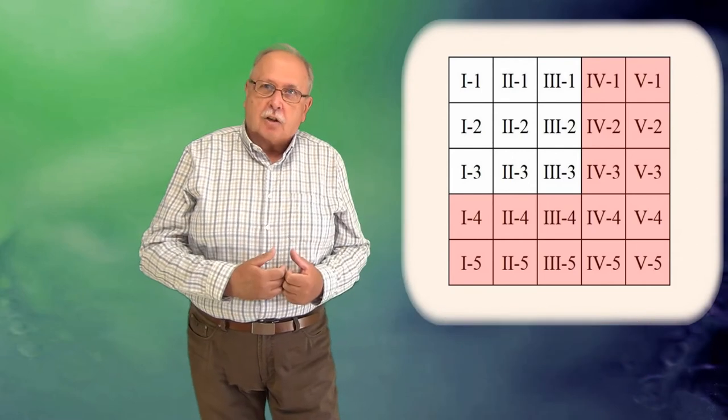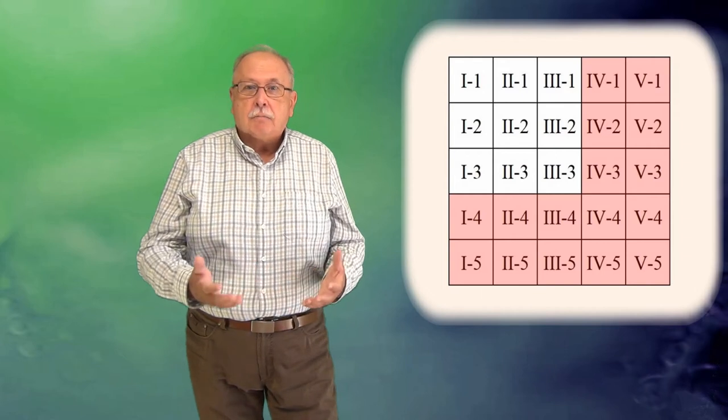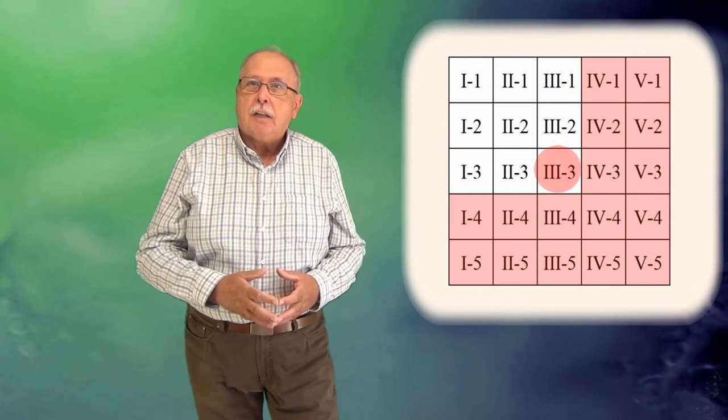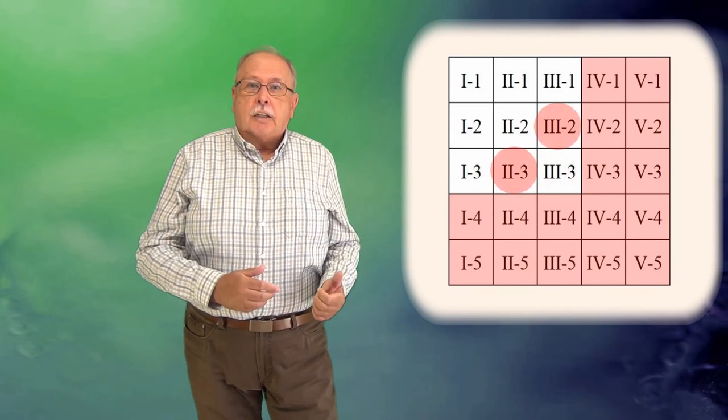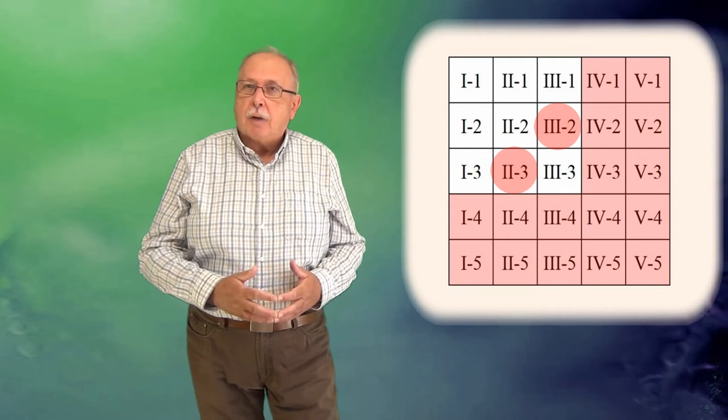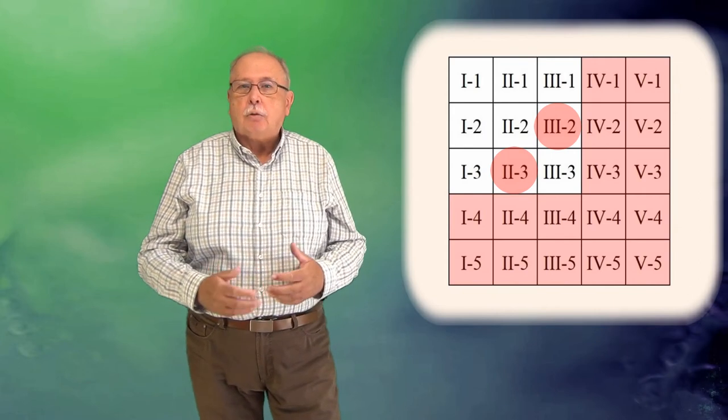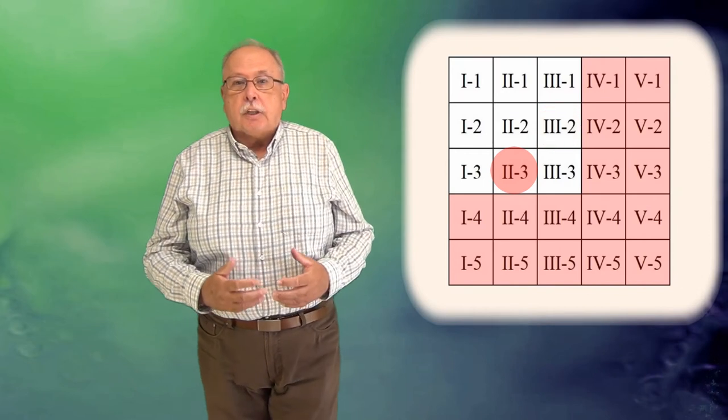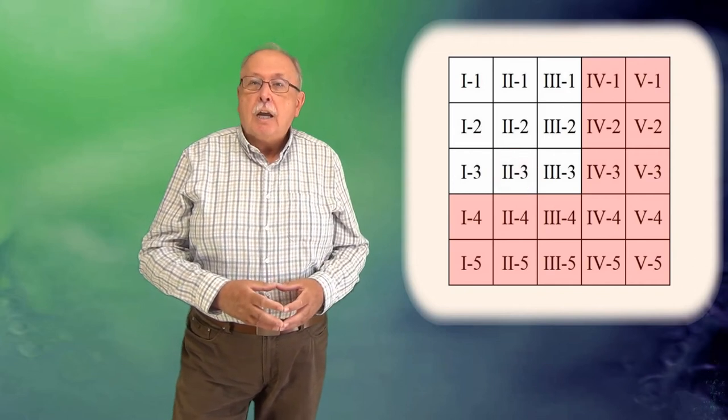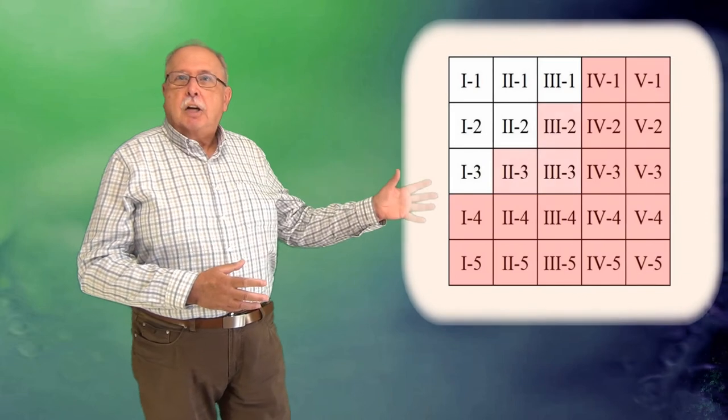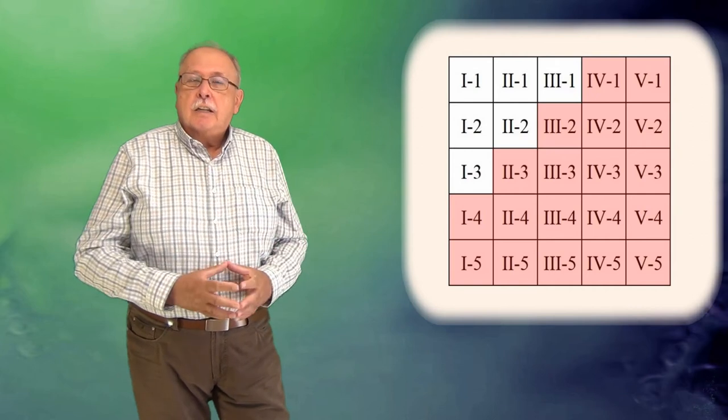Dar, conform regulilor enunțate, mai putem elimina niște mașini. De pildă, 3-3 are 4 mașini mai rapide decât ea: 3-2, 3-1, 2-1 și 1-1. 2-3 și 3-2 au câte 3 mașini mai rapide decât fiecare. 3-2 are mai rapide decât ea mașinile 3-1, 2-1 și 1-1. Iar 2-3 are mașinile 2-2, 2-1 și 1-1 mai rapide decât ea. Așa că putem elimina și aceste 3 mașini și ajungem la acest tabel. Au mai rămas în competiție șase mașini.